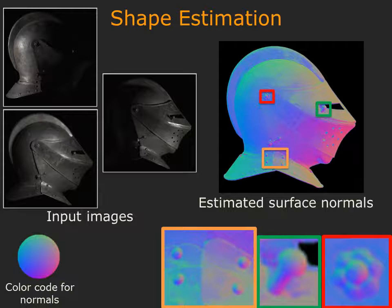The helmet in the scene has very little diffuse component. In spite of this, notice how our per-pixel normal estimation algorithm recovers the fine details on the object.